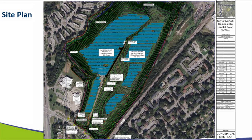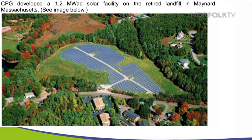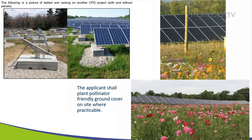Here is the proposed site plan. This is an eight megawatt facility, which should be enough to power 2,400 residential homes. Moving to the next slide, we see an example of a similar project that Community Power Group, the applicant, has done — a much smaller facility, only 1.2 megawatts, in Maynard, Massachusetts. On the left-hand side of the screen is how the construction will go and how the solar panels will look when constructed. Because the landfill is capped, they can't penetrate the ground, so this construction method doesn't penetrate the cap. DEQ will approve their construction plan and monitor the construction to make sure the cap stays intact.